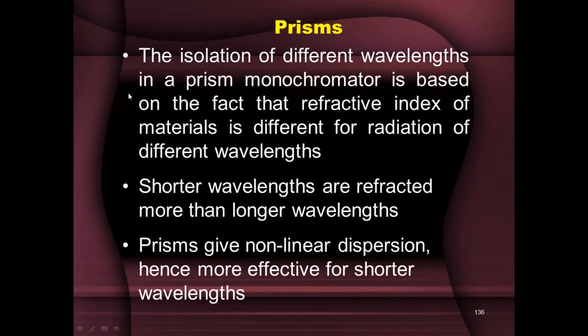We start off with prisms. The isolation of different wavelengths in a prism monochromator is based on the fact that the refractive index of materials is different for radiation of different wavelengths. So if you say the refractive index of a material is a certain value, that's measured at a particular wavelength. If you change the wavelength, then the refractive index will also be different. It all depends on the angle of refraction.